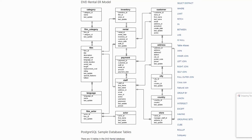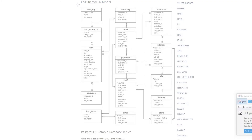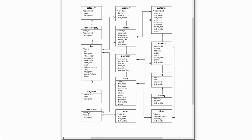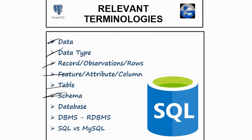And if we take everything into consideration, this entire view is called a database. Just to summarize: a database is nothing but a collection of a lot of tables. And the way these tables are linked with each other — the kind of relation they have — is called the schema of the database.